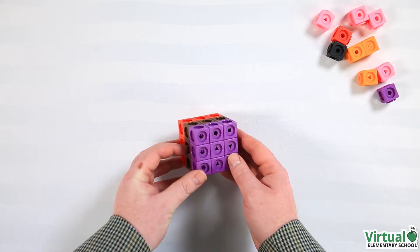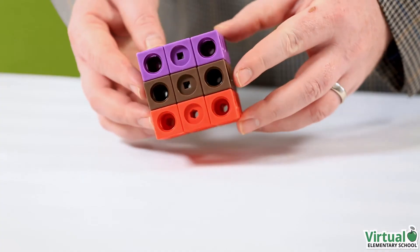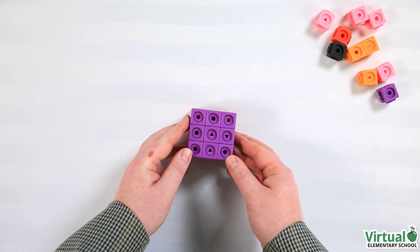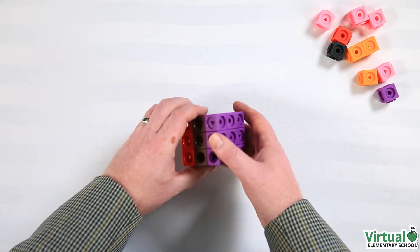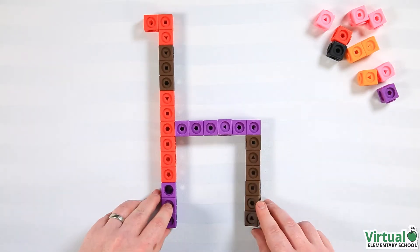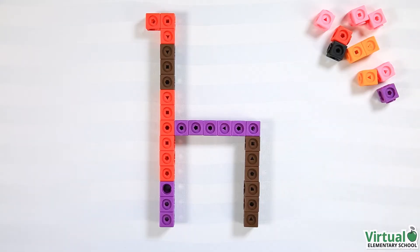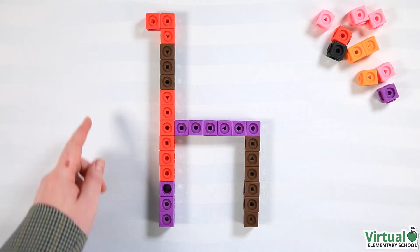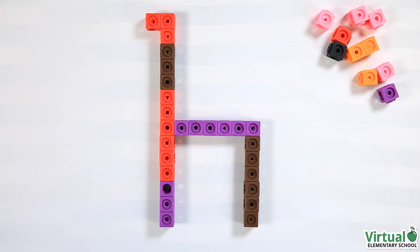Do you think the volume changes if we change the shape of this cube into, say, a big giraffe? We would still have the same number of connecting cubes so the volume will remain the same.